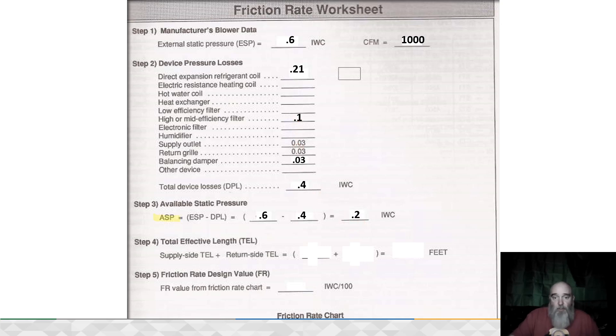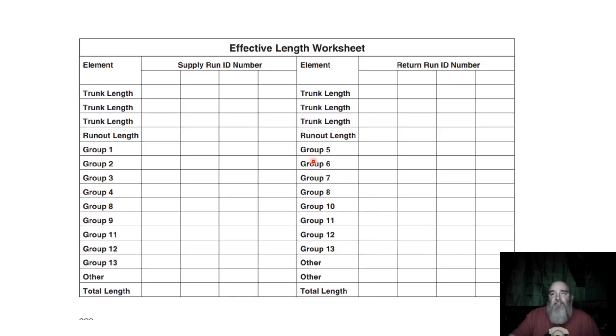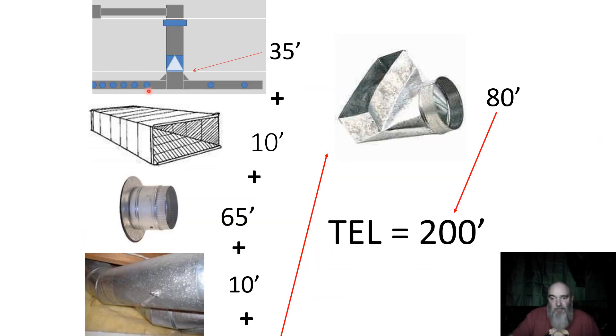This is an example of a worksheet that you'll find in Manual D. It shows us taking trunk lengths and fittings and everything to solve for our supply as well as our return critical path. Here's a visual of it.